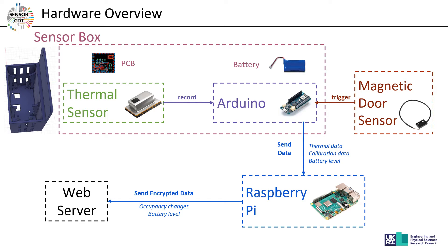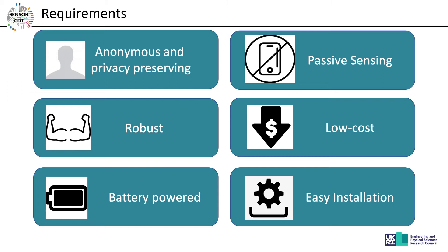The sensor uses a lot of energy, so to minimize energy consumption we use a magnetic door sensor. This means the thermal sensor is only turned on when the door is open, which also helps reduce error in the system.